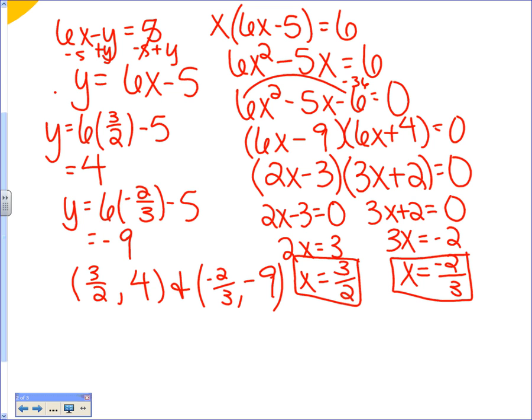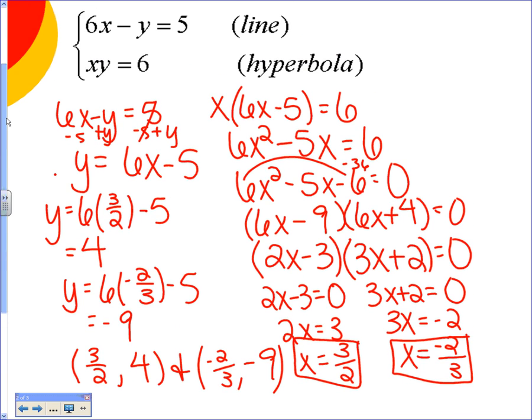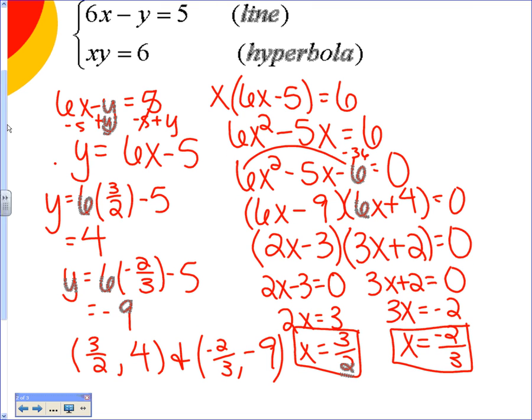So we plugged it into this first equation to get the y value. When we multiply our x and y, what should they equal? 6. So check. Is 3 halves times 4, 6? Yes. Is negative 2 thirds times negative 9, 6? Yes. So we probably did it correctly. Yeah, they do take a little bit of writing. But do y'all see how they work? Any questions here?